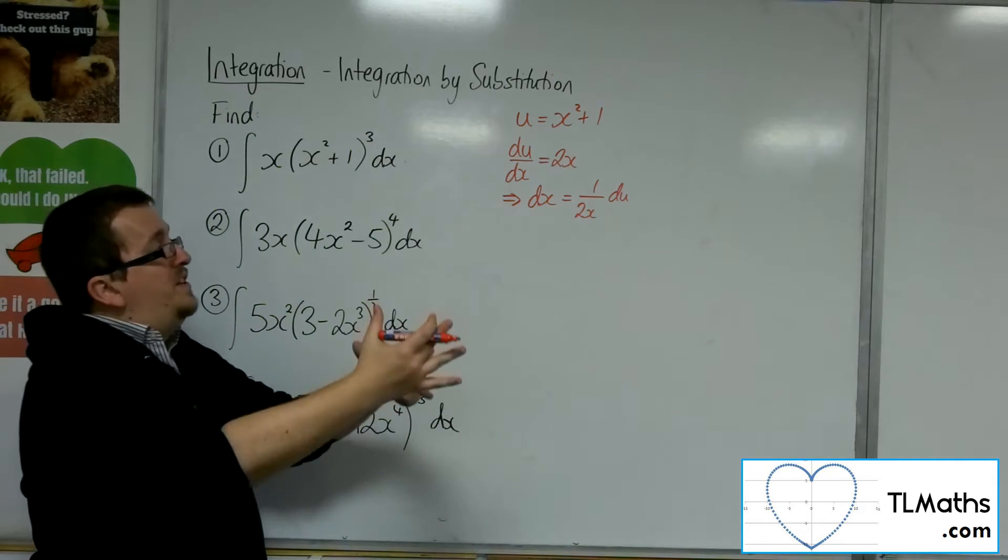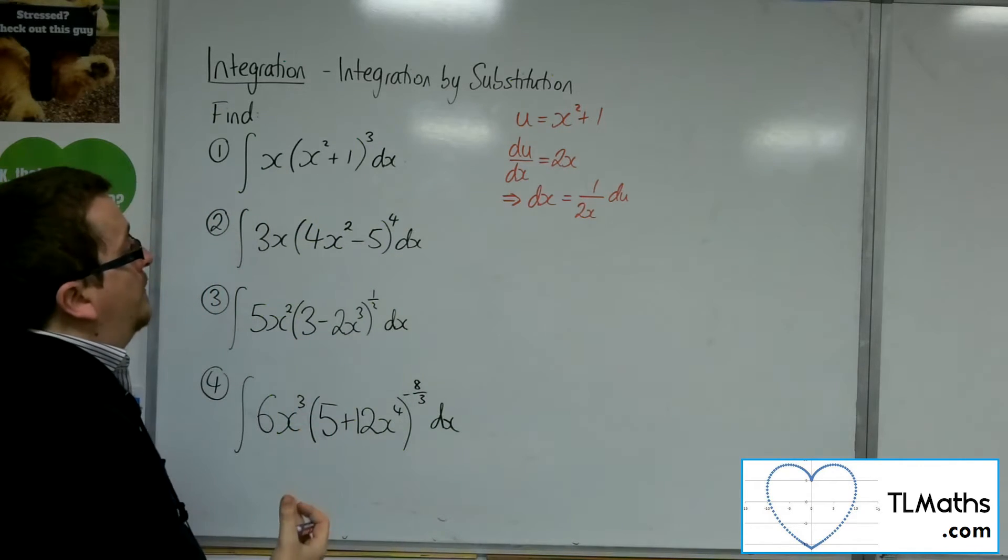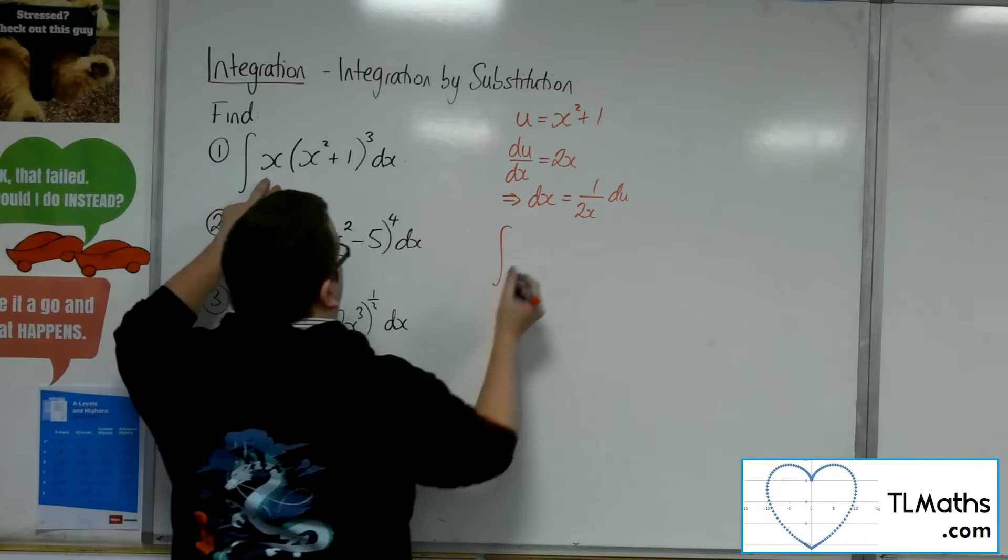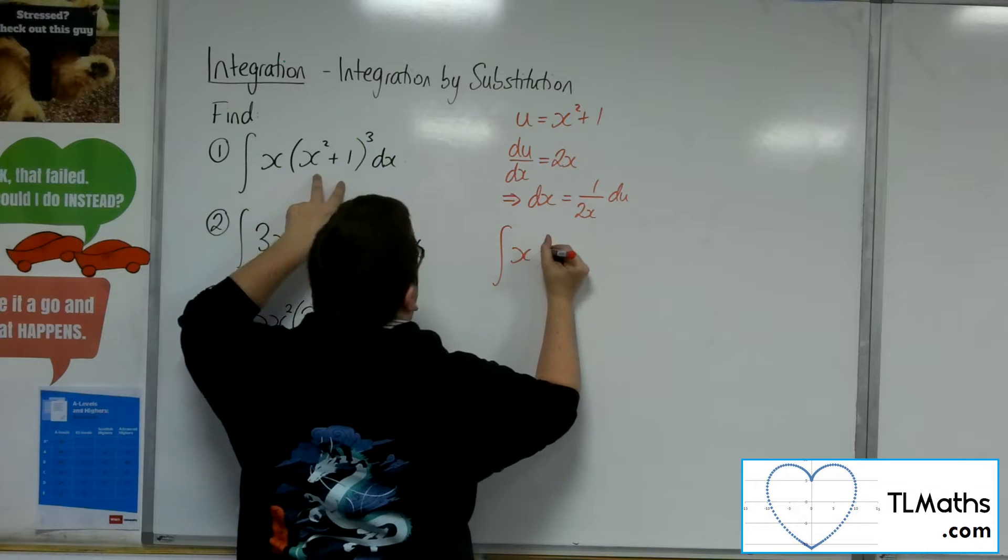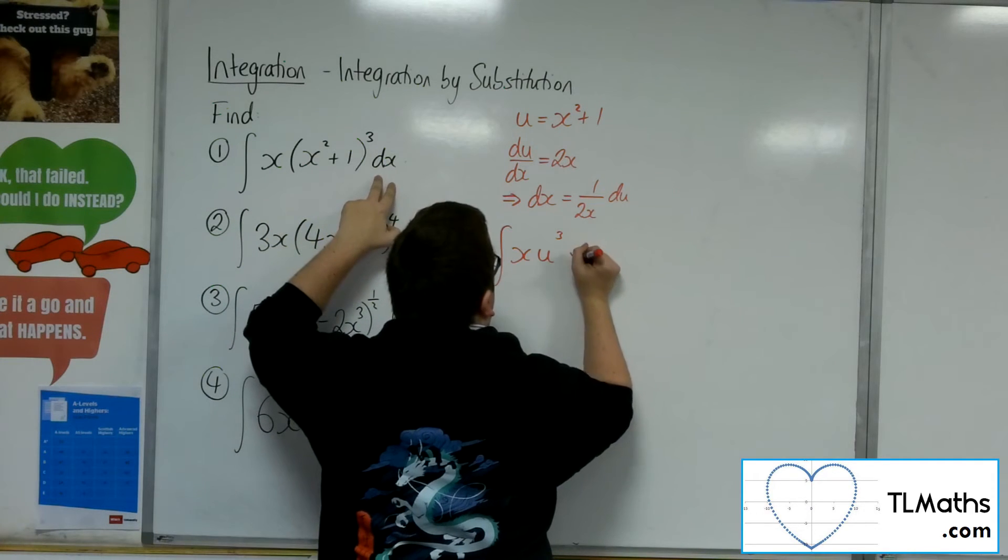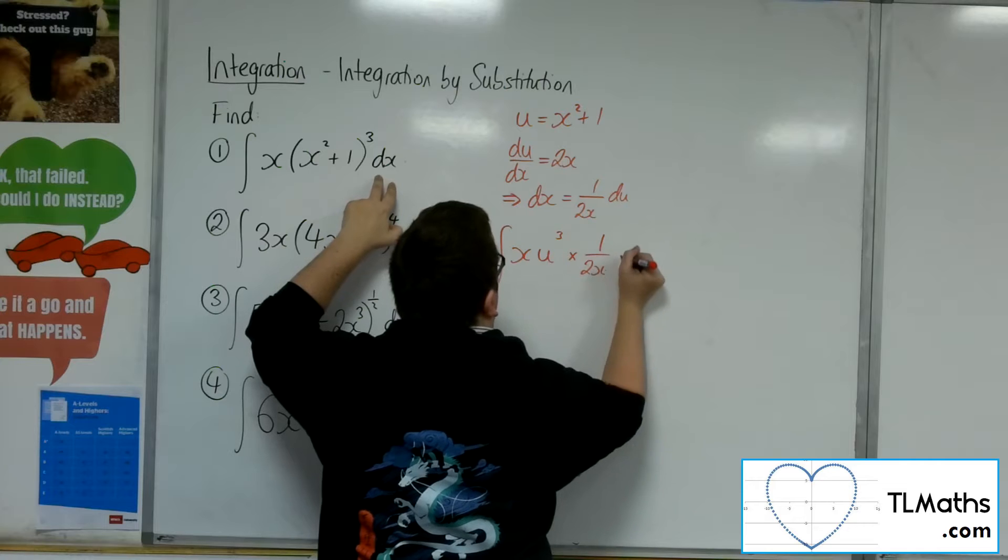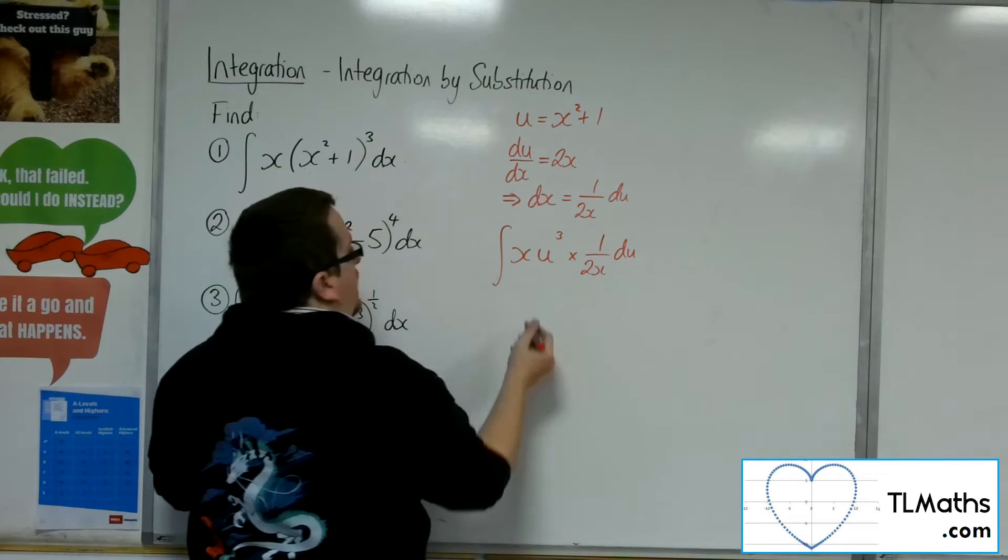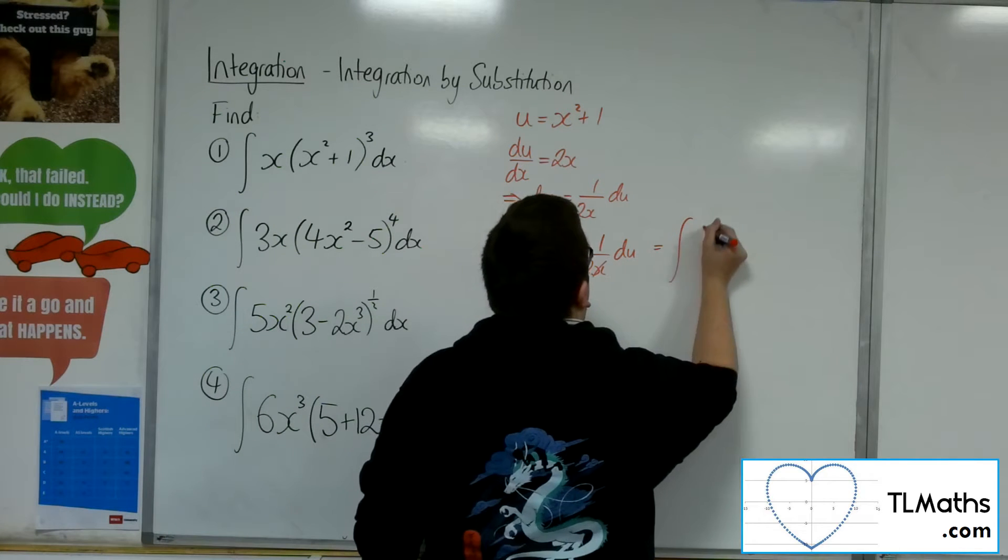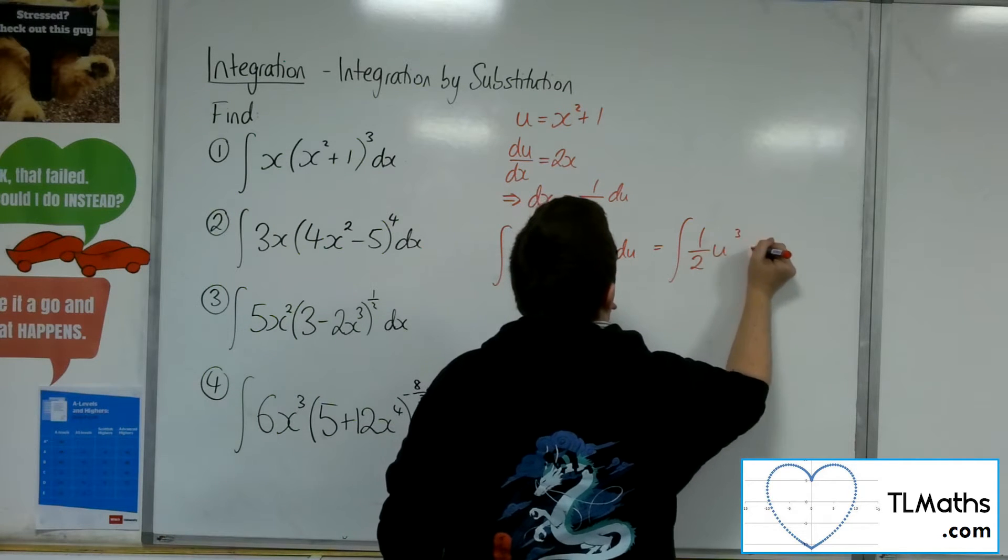So multiplying both sides by dx, dividing both sides by 2x. I've now got the integral of x times u cubed, and we've got the dx replaced with 1 over 2x du. The x will cancel, leaving me with the integral of 1 half u cubed du.